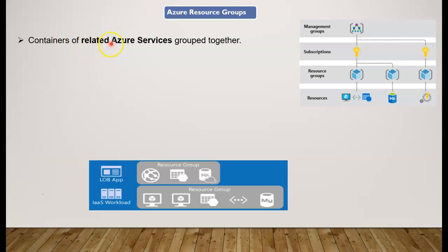A resource group is a container of related Azure services grouped together. It is not a product you buy from Microsoft Azure individually — rather it's a way to group all the resources and services that you buy from Azure. When creating any Azure service, the first step is to place that service into a resource group. The idea is that you group together related resources that share the same lifecycle — resources that should be deployed, updated, or deleted at the same time.